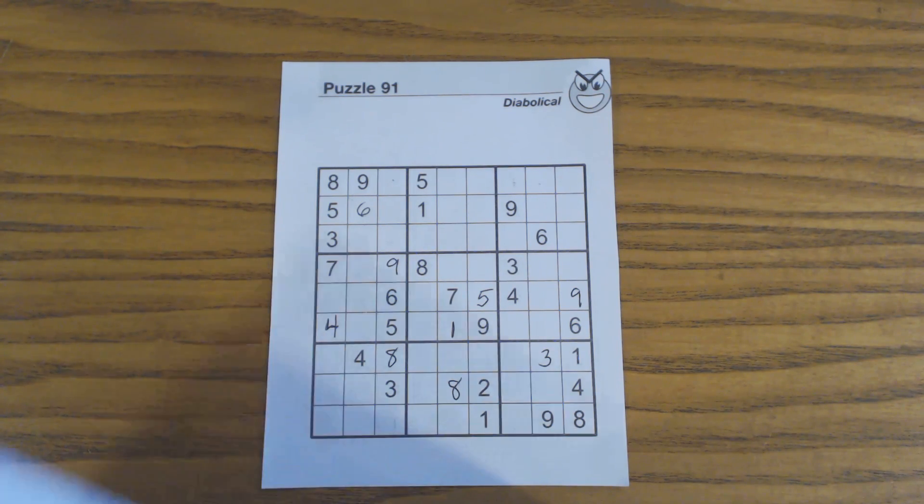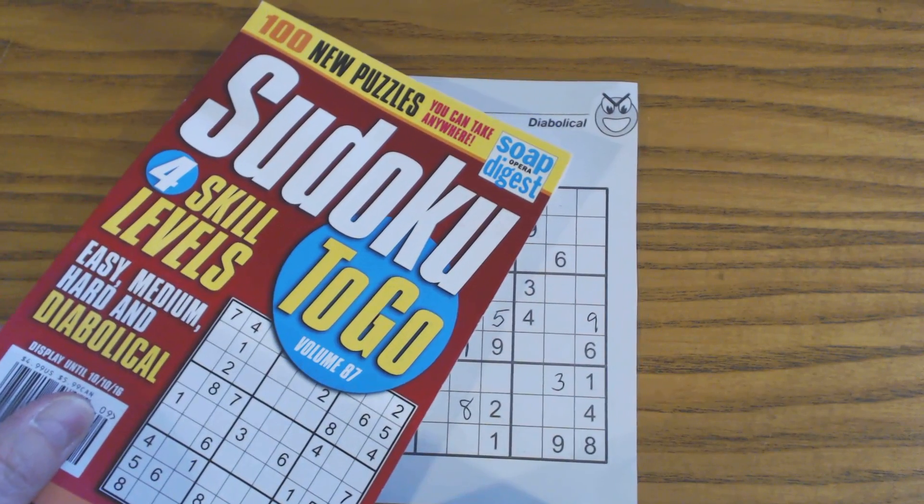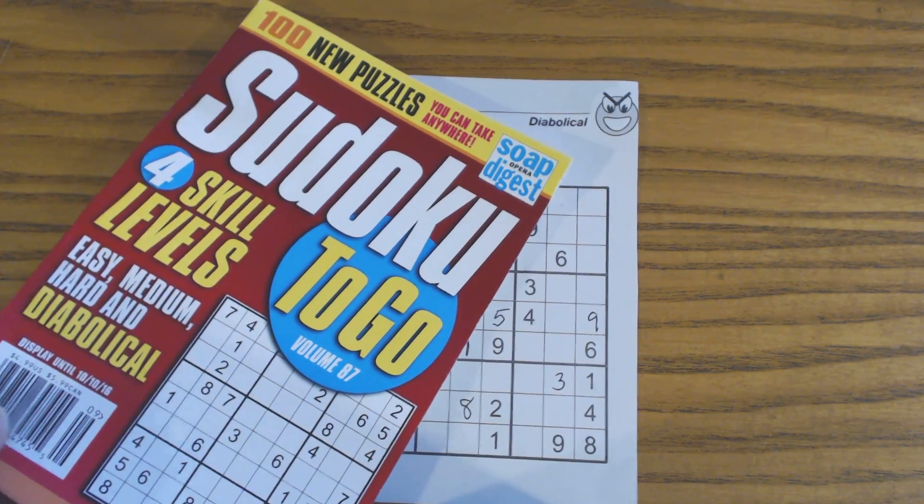This is puzzle number 91 from Sudoku2Go, volume 87, by Soap Opera Digest.